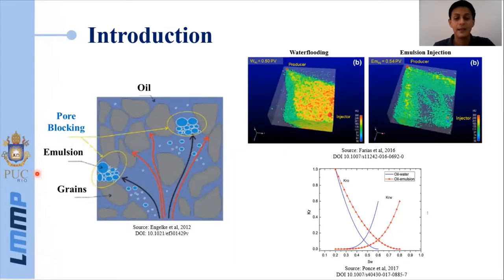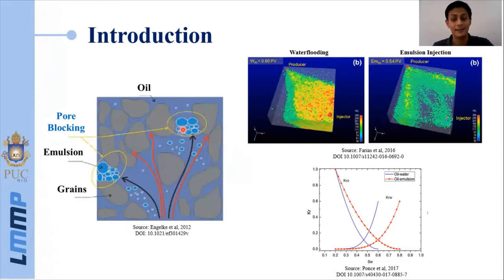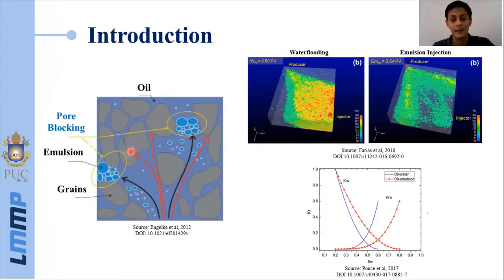Emulsion flooding is an enhanced oil recovery method known for its capability to improve the conformance of highly porous and permeable zones inside the reservoir. This conformance is conducted through the capture of oil droplets suspended in a stable emulsion, generating new flow paths, usually named as divergent flow. The divergent flow has the capability to alter the capillary forces state, inducing the mobilization of trapped oil and thus increasing the recovery factor.